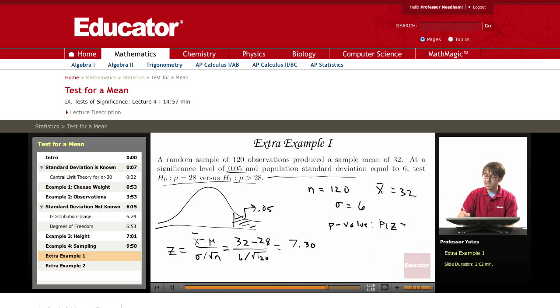So I'm taking the probability that z is greater than or equal to 7.30. This is off the chart, so it's approximately zero.